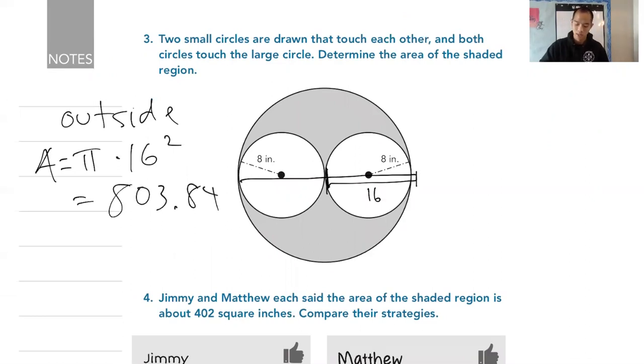But now we have to take away the circles, the two circles. So let's find one of them and I'm just going to subtract it twice because they're both the same size. If they're not the same size, you can't do that. So then you're going to say it's π times 8 squared. I believe we did that earlier, but I'm going to go ahead and type that into my calculator. 3.14 times 8 squared, and I'm going to get 200.96.